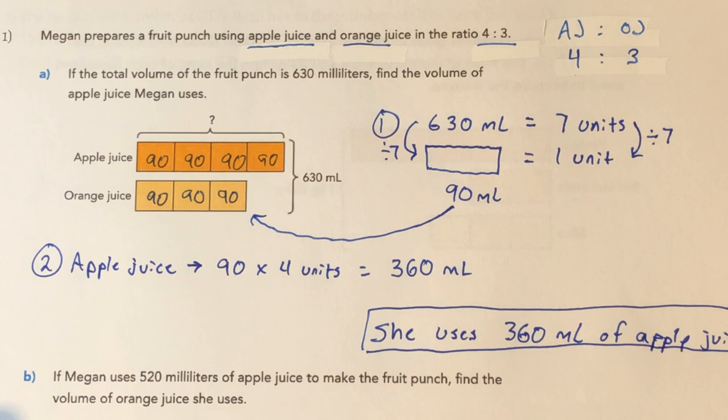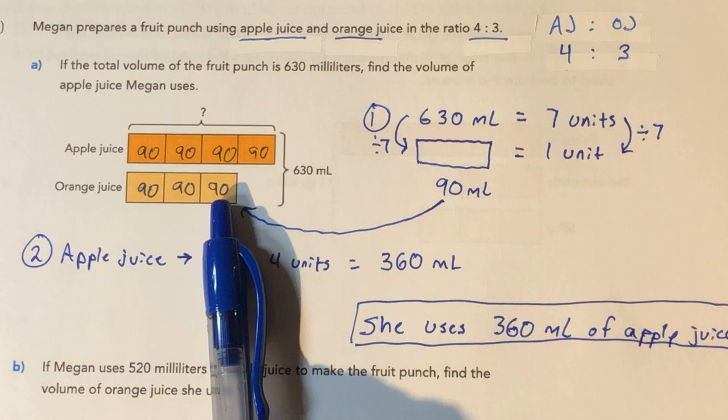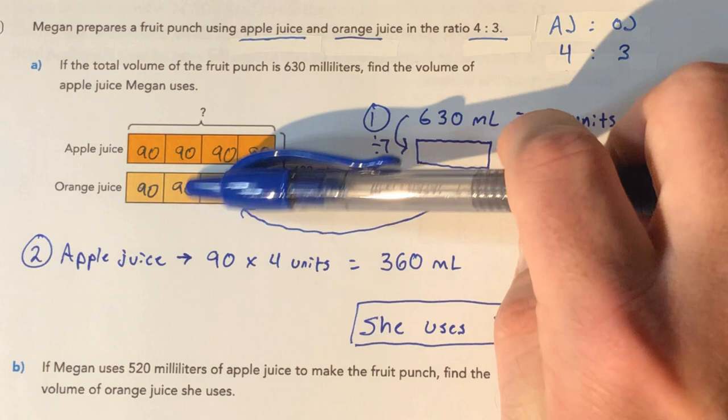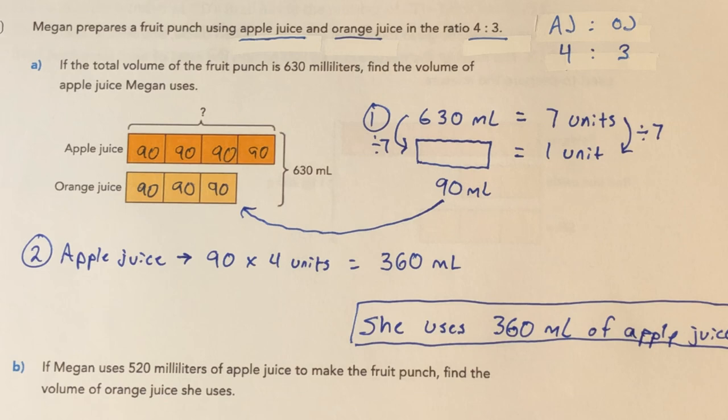Now if I wanted to know orange juice, because I found that unit rate and each unit is 90, I could do 3 times 90 and get that information as well. I could also take 630, which is the total, subtract 360, and get orange juice. So once you know that unit rate, there are so many ways you can find the other information that you may or may not want to know.